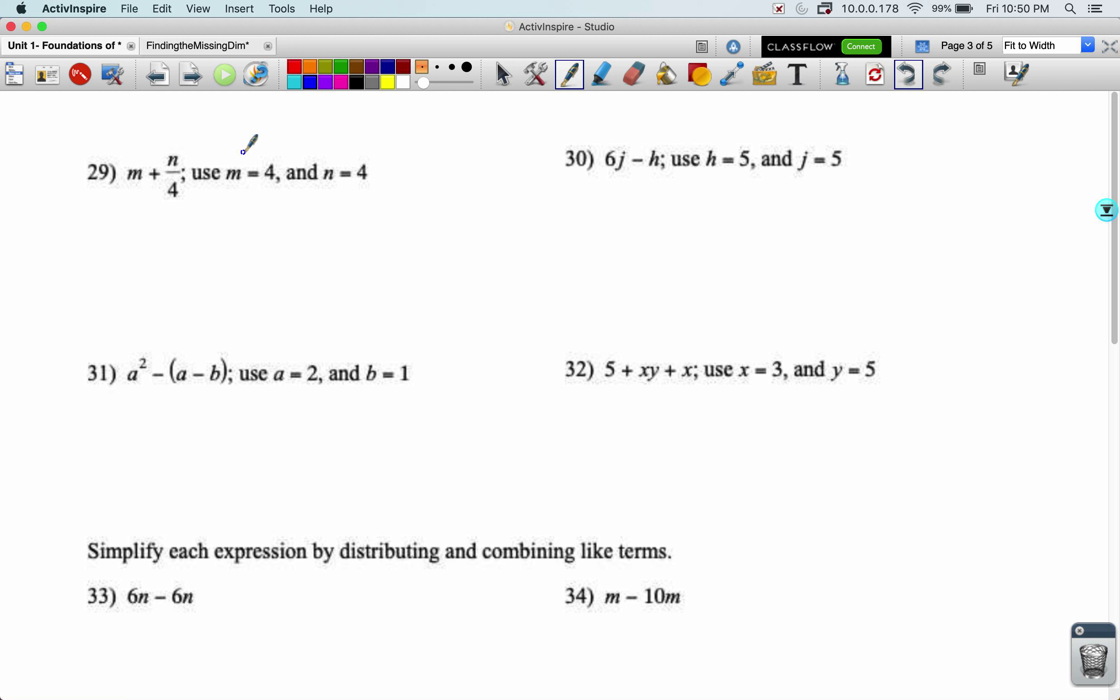Let's try 29. So M is four. N is four. I've got four plus four over four. You have to do the division first here. This becomes four plus one, which becomes a five.